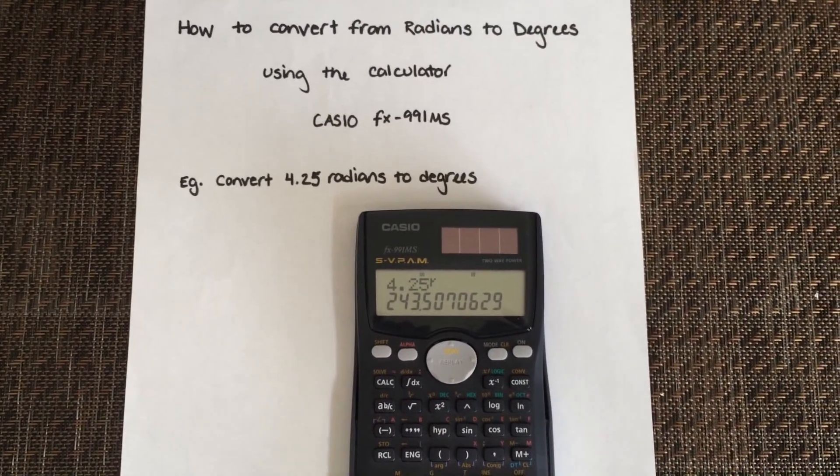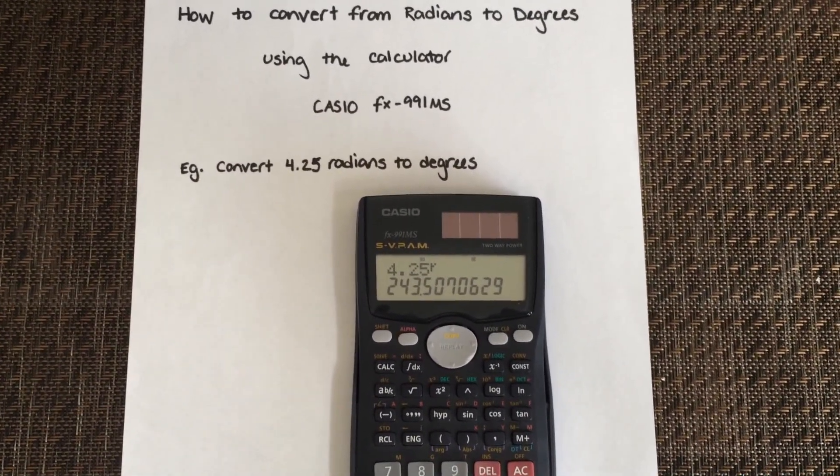And that's how you convert radians to degrees using your Casio FX 991MS.